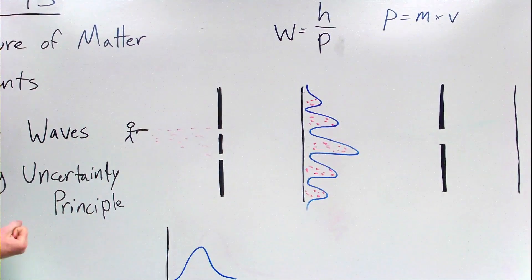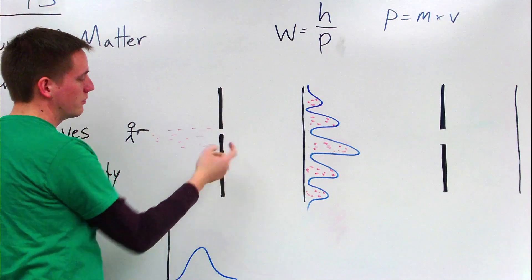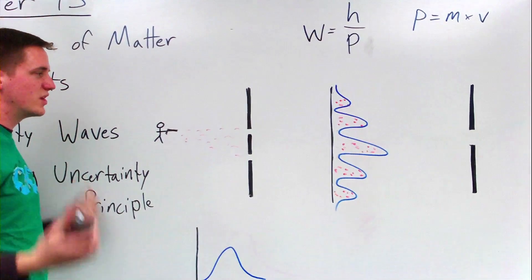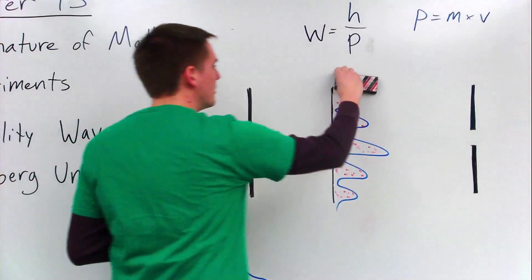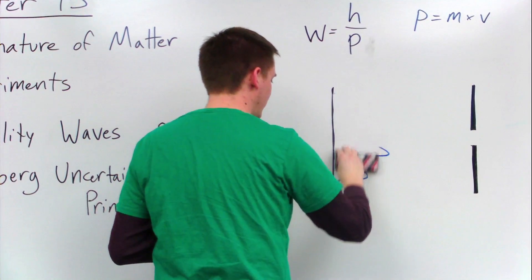So it would appear to scientists that these electrons were interfering with themselves as they go through these slits. Well, scientists wanted to find out more, and so they thought, well, maybe these electrons are bouncing off of each other and creating that pattern.